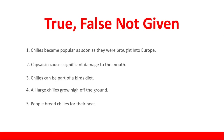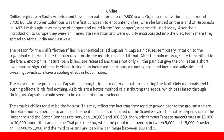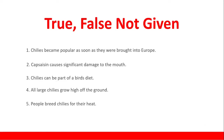'People breed chilies for their heat.' The heat of the chili is measured on the Scoville scale. The text is only talking about how heat is measured — it has not mentioned anywhere that people breed chilies for their heat. So it should be Not Given. This is how you figure out True, False, Not Given. You might find this reading easy, but in the real test it is more difficult — please start reading newspapers.